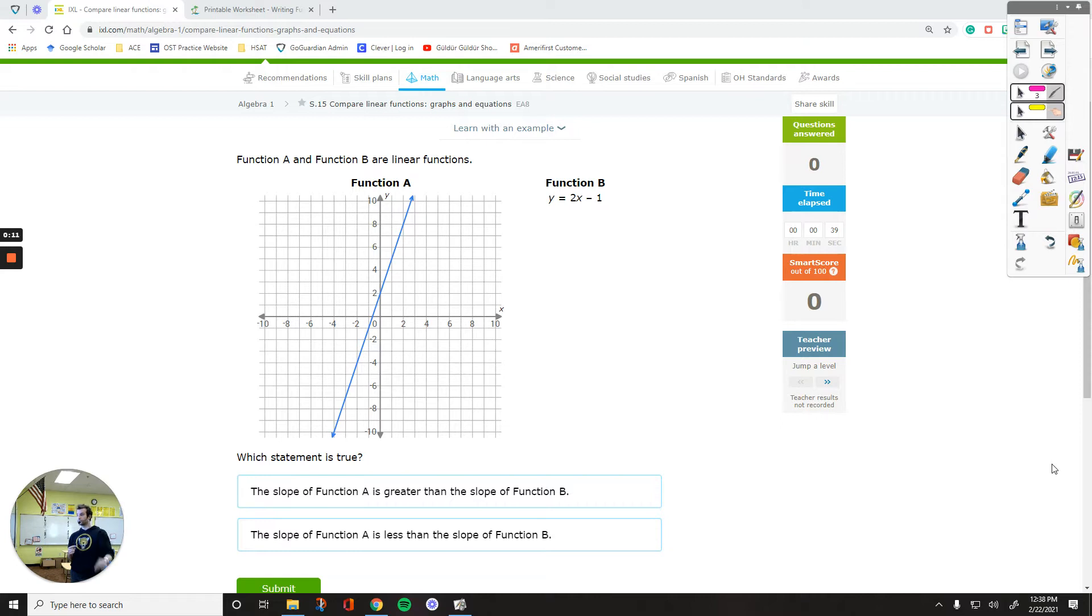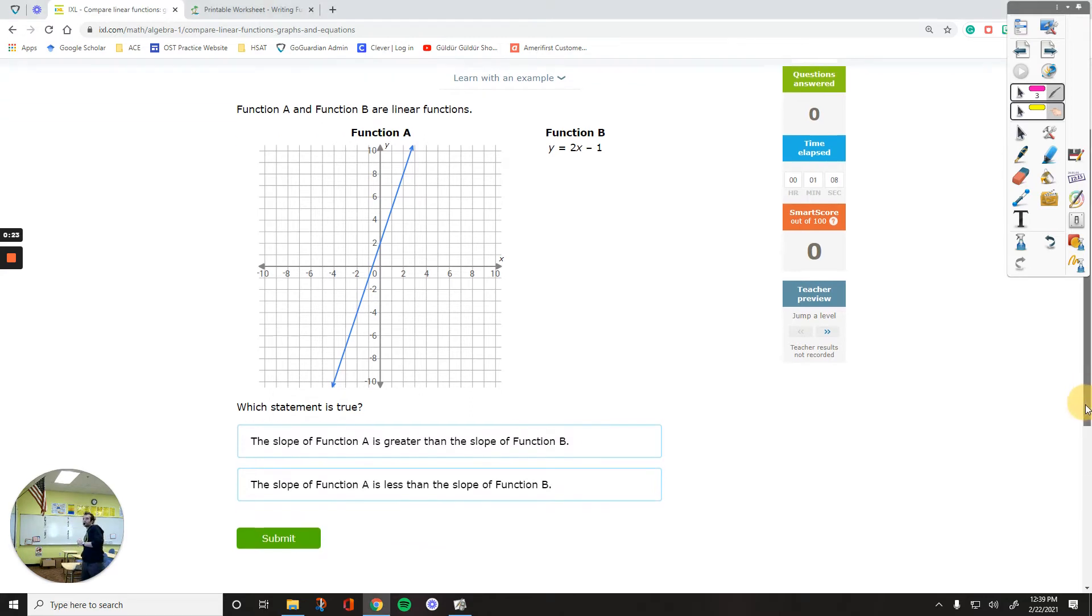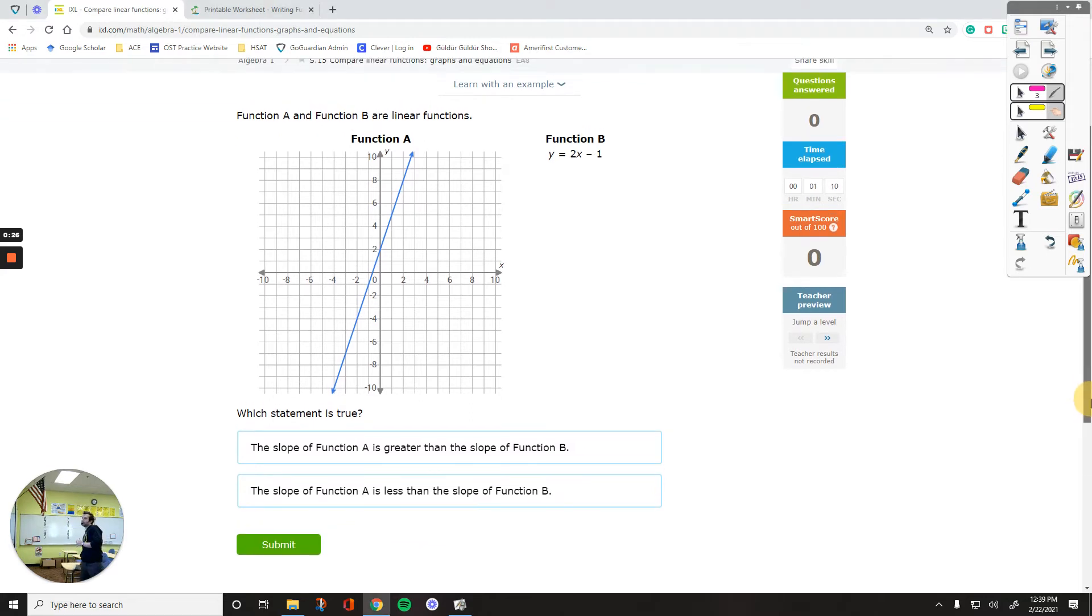We are going to compare their slopes and y-intercepts in general. So we are working on IXL Algebra 1 S15 Compare Linear Functions, Graphs and Equations. In this assignment one function is given as a graph, the other is an equation. Sometimes we compare their slopes, their steepness, sometimes we compare the y-intercept of the two.